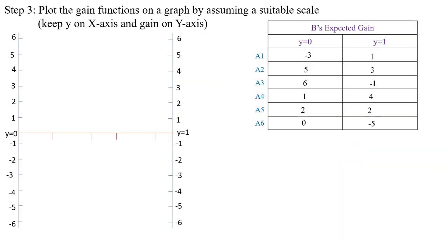Next, plot the gain functions on a graph sheet using a suitable scale. The gain values are: A1 alternative: (−3, 1); A2 alternative: (5, 3); A3 alternative: (6, −1); A4 alternative: (1, 4); A5 alternative: (2, 2); A6 alternative: (0, −5). Draw the y-axis with values 0 and 1 on the x-axis. The maximum gain is 6 and the minimum gain is −5.